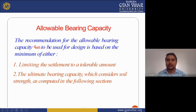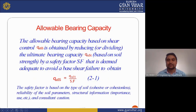What is the allowable bearing capacity? The recommendation for allowable bearing capacity, represented by QAS, is based on the minimum of either: first, limiting the settlement to a tolerable amount; or second, the ultimate bearing capacity which considers soil strength. The allowable bearing capacity based on shear control is obtained by reducing the ultimate bearing capacity: QAS equals Q-ultimate divided by the safety factor. The safety factor depends on the type of soil — cohesive or cohesionless — reliability of soil parameters, structural information, and consultant causes.